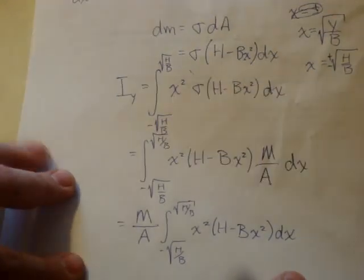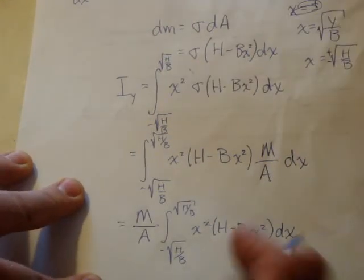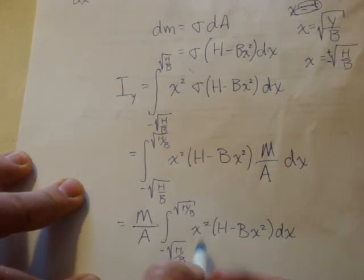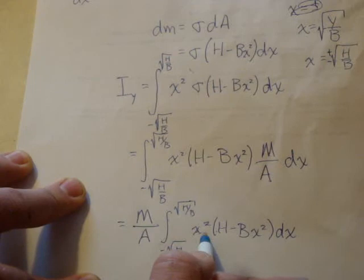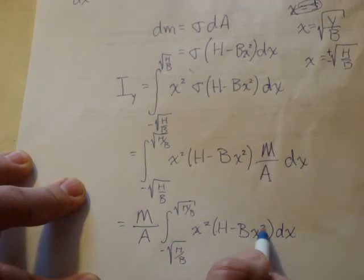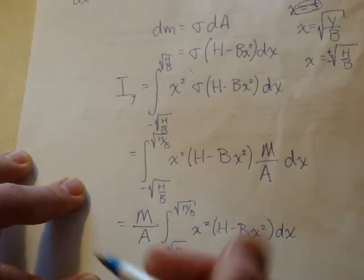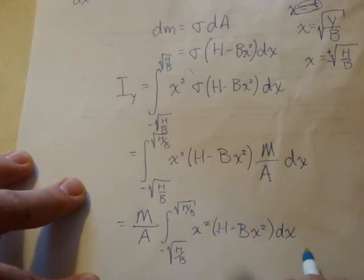it may look complicated, but this should be very straightforward. You've done dozens of integrals like this in your calculus class. The thing that I would probably suggest doing is distributing this x squared into each of these terms. That'll give us h x squared as the first term, minus b x to the fourth. And then as we evaluate this, it's simply a polynomial then.